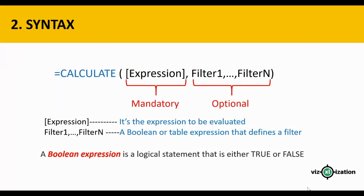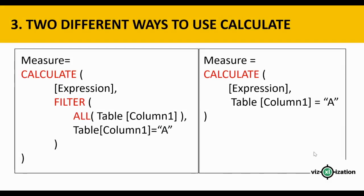The CALCULATE function has two different parts. The first part on the left is the expression, which is mandatory. The second part is related to filters, which is optional. A filter is a boolean or table expression that defines a filter. A boolean expression is a logical statement that is either true or false, and we'll see boolean expressions in this tutorial as well.